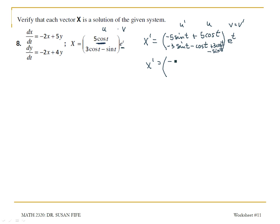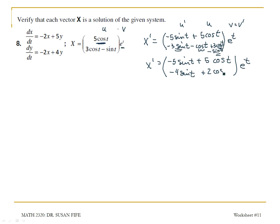I'm going to keep the first row as it is — I could factor out a 5, but I'll just leave it. In the second row, I can combine like terms: negative 3 sine t and negative 1 sine t give me negative 4 sine t. And negative cosine t and positive 3 cosine t give me positive 2 cosine t.